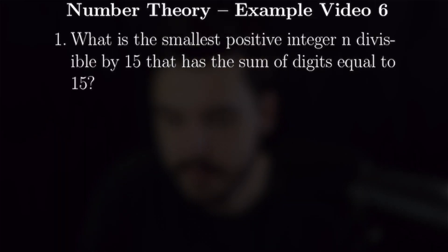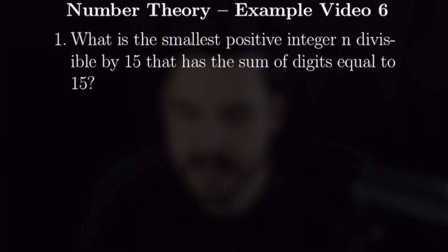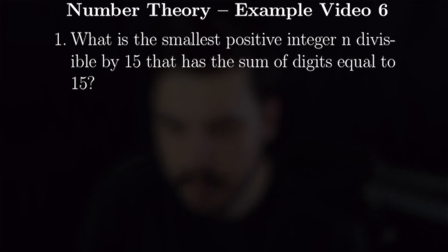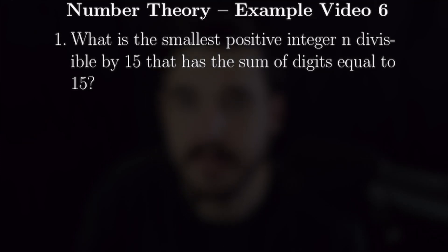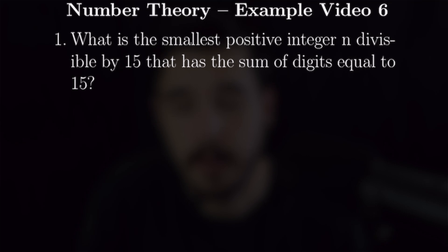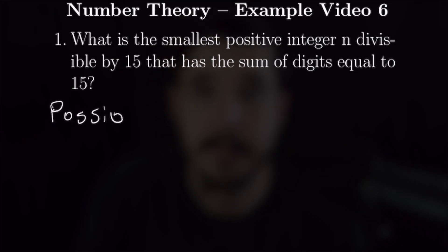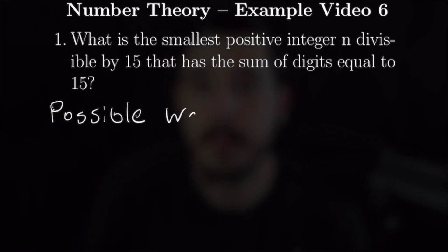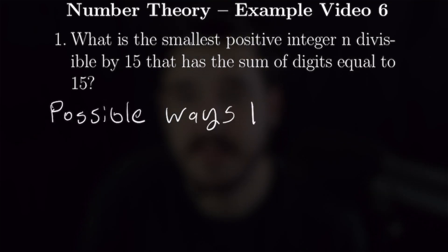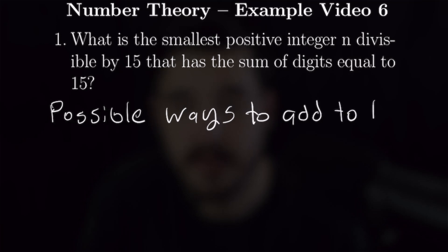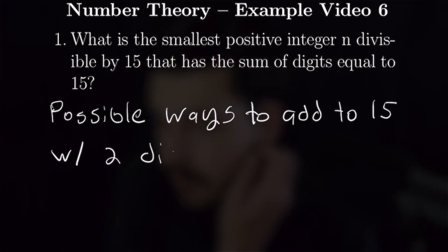For number one, we want to find the smallest positive integer n that is divisible by 15 and has the sum of digits equal to 15. Let's start by examining the smaller examples and then go larger. Obviously we can't make a number whose digits add up to 15 with only a one-digit number, so we can throw that out right away.